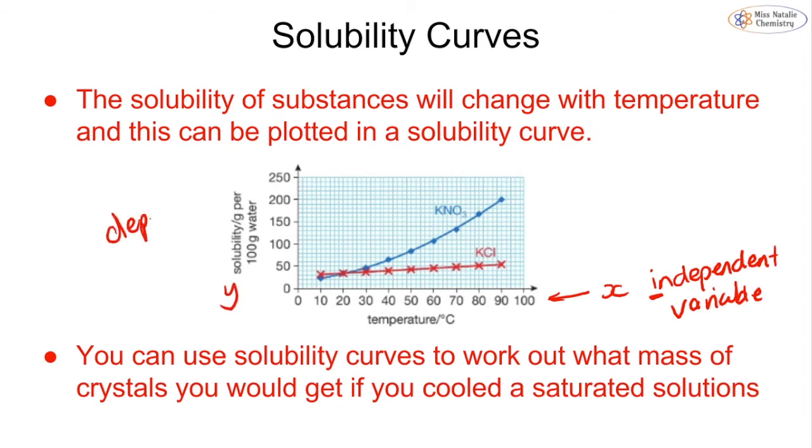Then my y-axis is going to be my dependent variable, and that is the solubility, because the solubility is going to be dependent on me changing the temperature. You can carry this out for a number of different substances. We do lots of experiments at different temperatures and we figure out how soluble each substance is at each temperature.